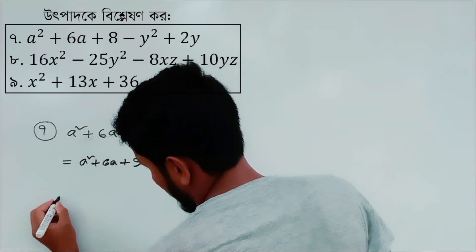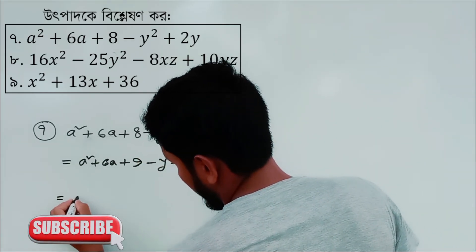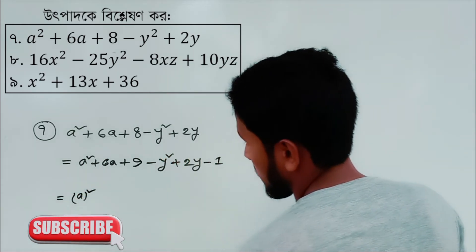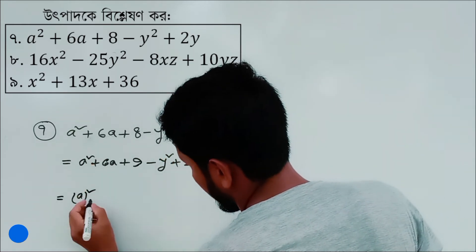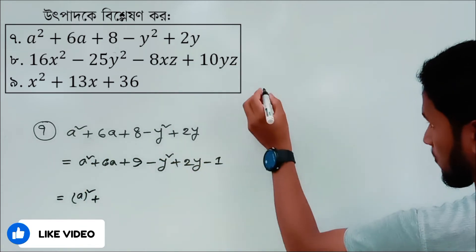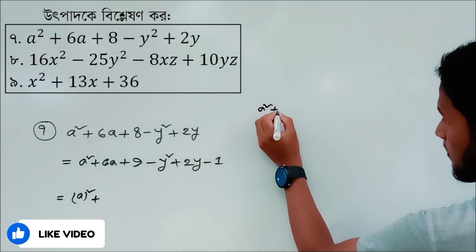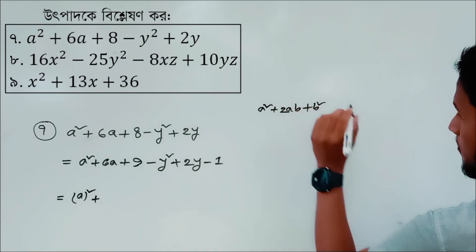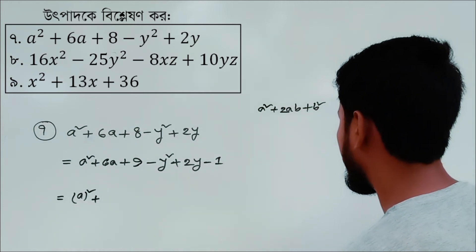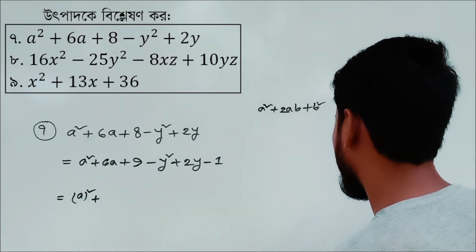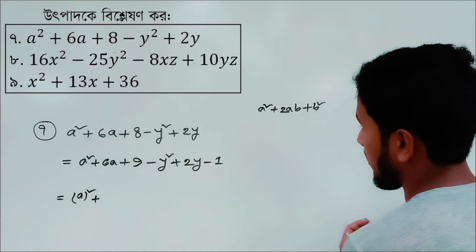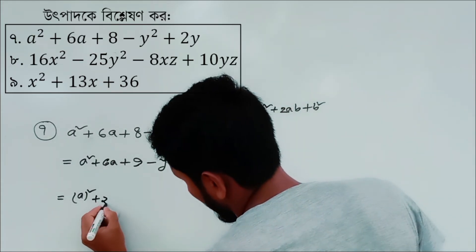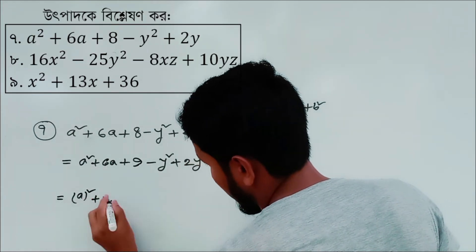First you write a. The identity is: a squared minus 2ab plus b squared, which equals a minus b squared. Also, a squared plus 2ab plus b squared.